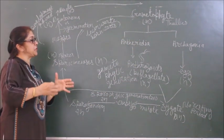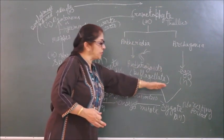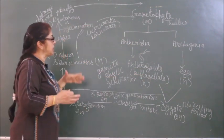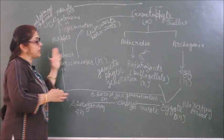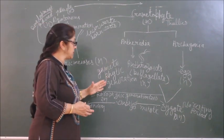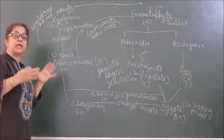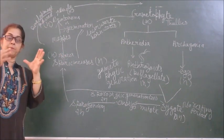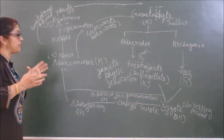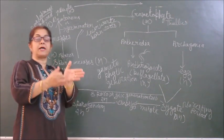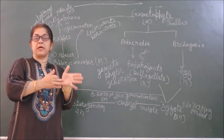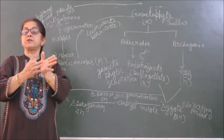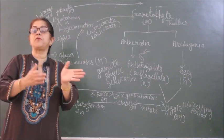In this manner we have seen the haploid gametophytic generation is alternating with diploid sporophytic generation. So that we can say such a life cycle is diplo-haplontic life cycle, or haplodiplontic life cycle. We can say haploid stage comes after diploid, and diploid stage comes after haploid. And that phenomenon is called the alternation of generation.